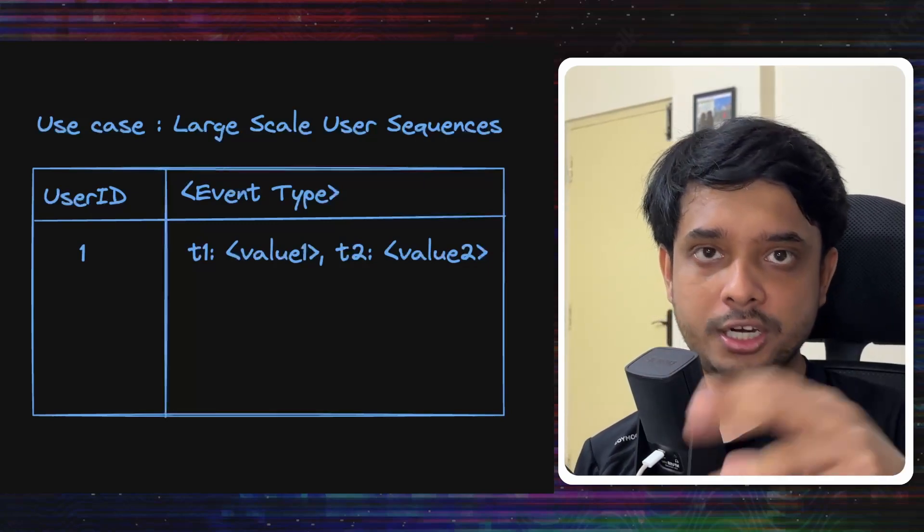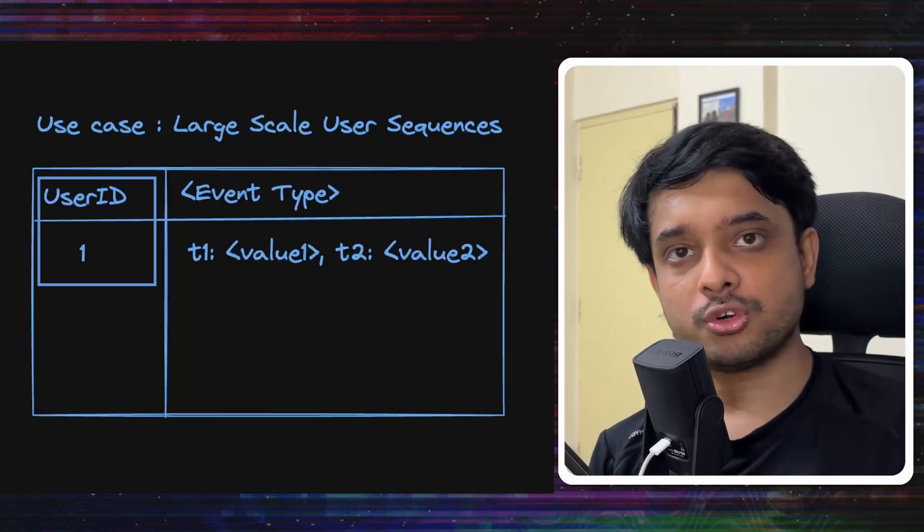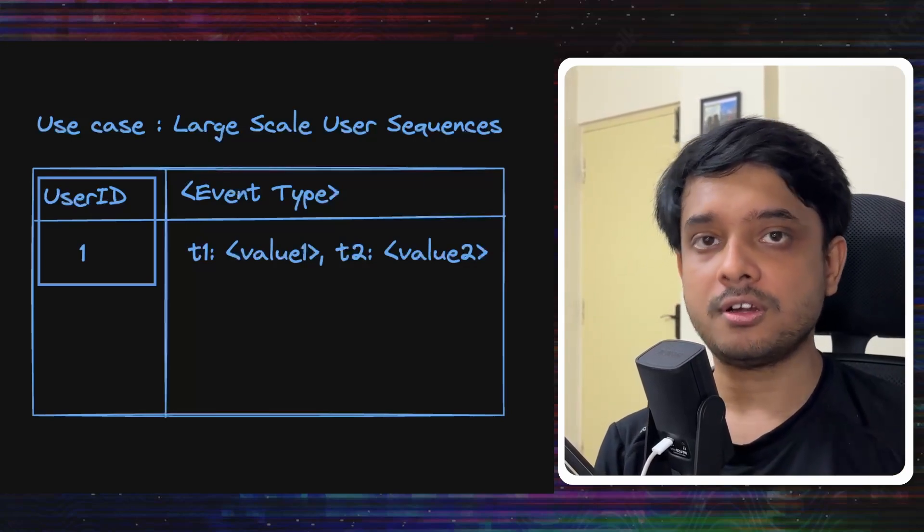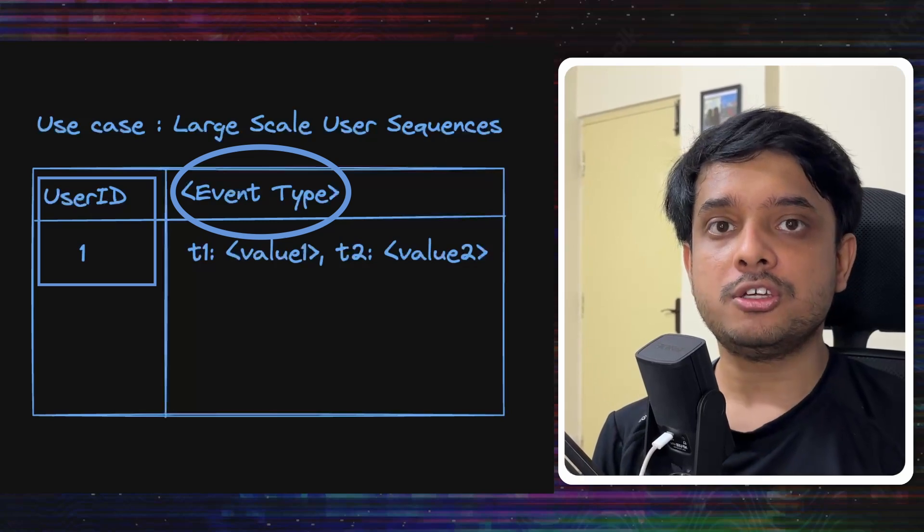To identify each row, we need a row key and in this case the row key is the user ID. So each row will be representing a user. Each column is the action type. So let's say searches, pins, repins, all these things are columns in the table.